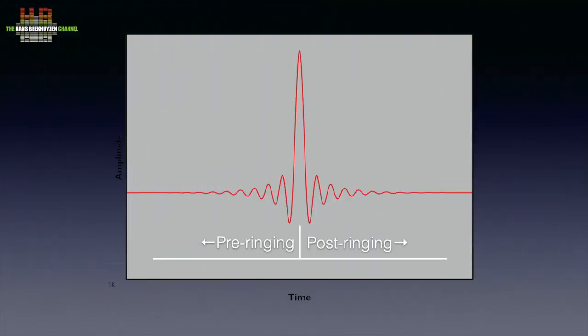The classic linear phase brick wall filter produces about 10 cycles of pre-ringing and 10 cycles of post-ringing. This can drastically be reduced by having the filters roll off more gradually while having the roll-off point lower in the audio band.